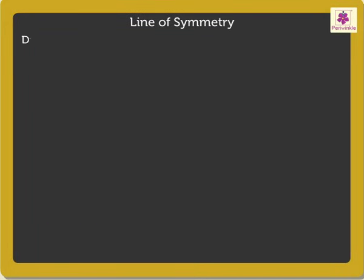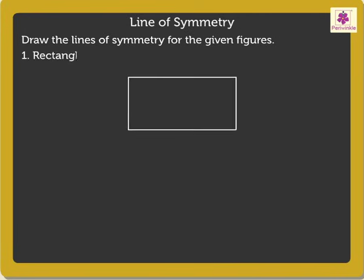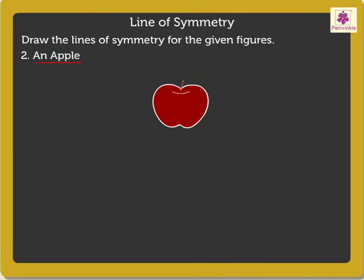Now, let's draw the lines of symmetry for the given figures. Figure 1: A Rectangle. Here, we can divide the figure into two equal halves by folding it vertically or horizontally. Thus, we say a rectangle has two lines of symmetry.